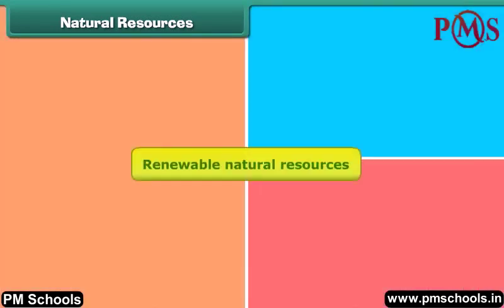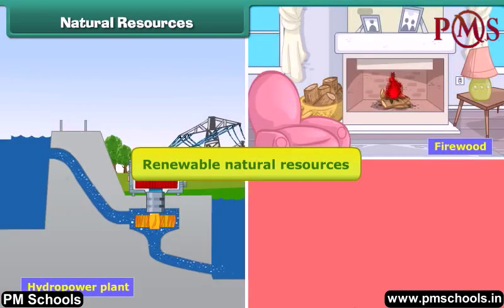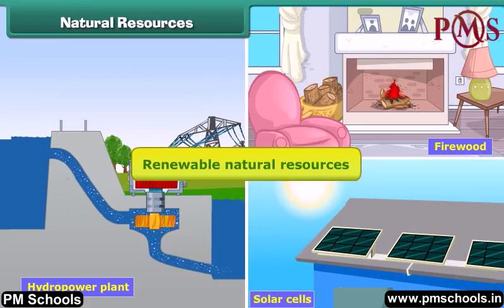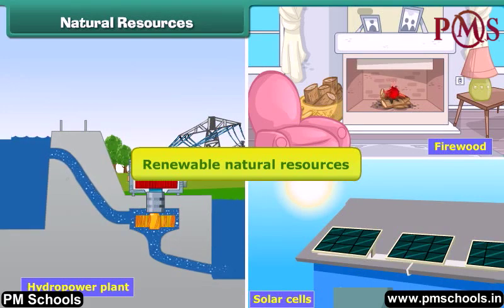Renewable natural resources are those resources that are not exhausted by human use. They are reformed and are available for continuous human use. For example, sunlight, water, trees etc. are renewable natural resources.